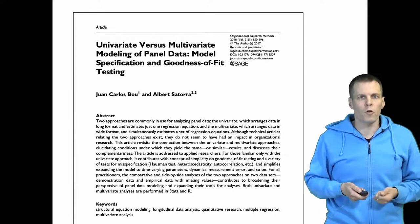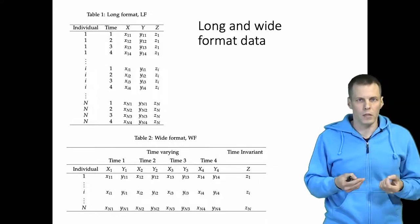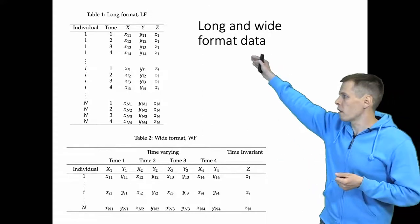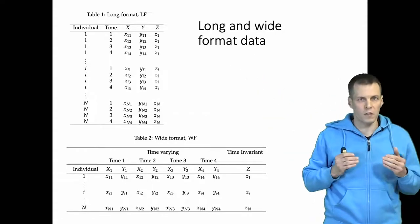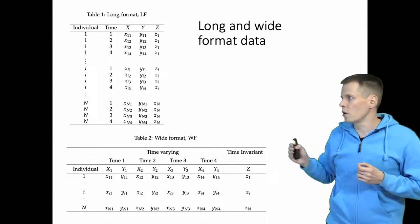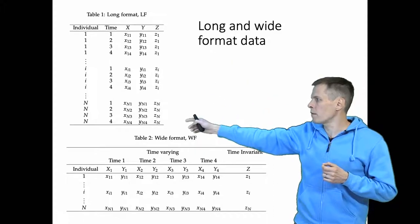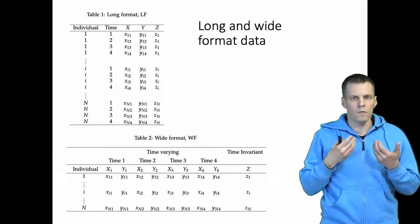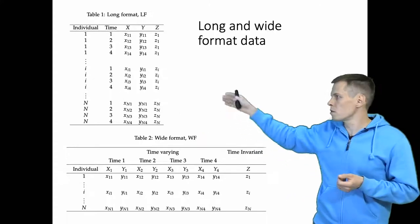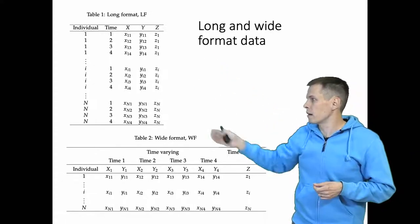Let's take a look at what wide format and long format data are. We can structure the same set of information in different ways. In the long form data, we have our individuals each observed four times, so we have four observations for each individual. We have values X11 through XN4, Y11 through YN4, and Z1 through ZN. Z does not vary within individuals, so we always use the same value of Z for one individual.